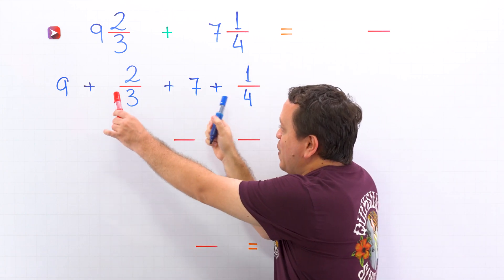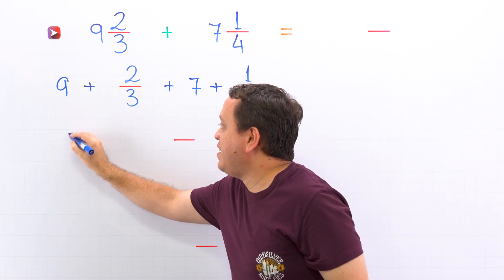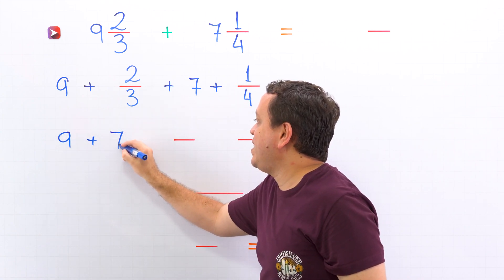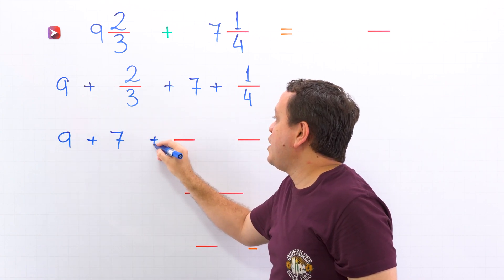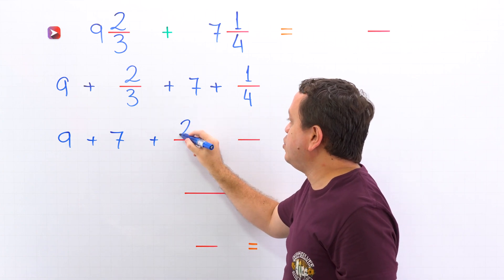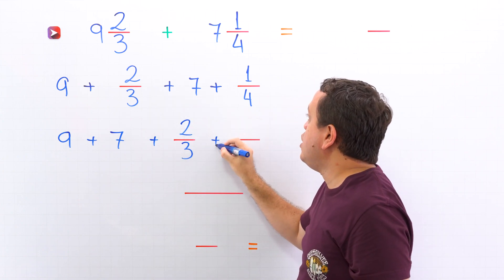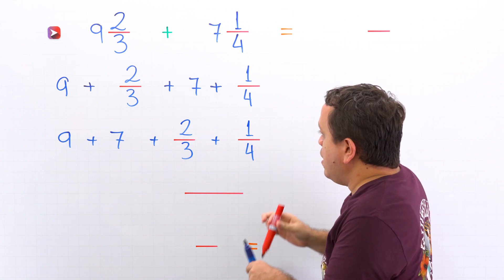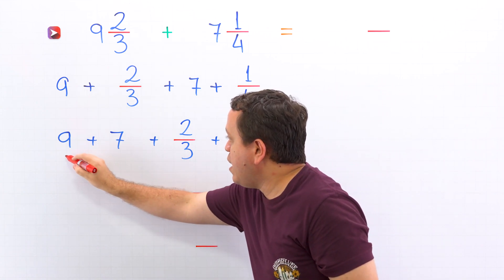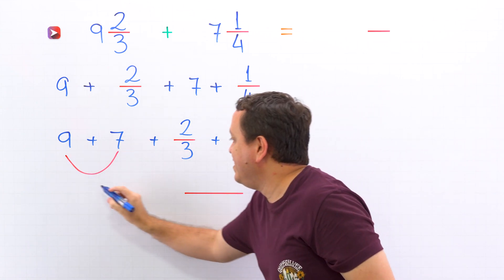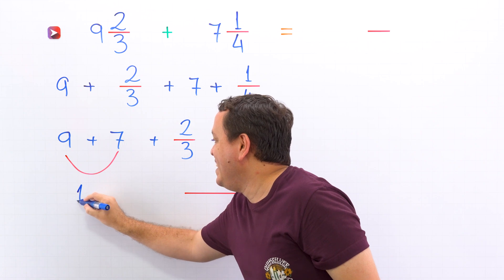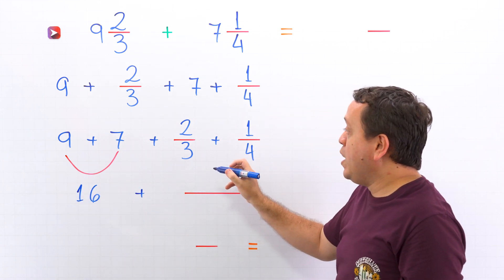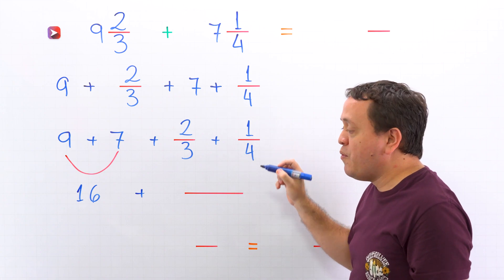Next, we put the whole numbers at the beginning — the whole numbers are 9 and 7. Next, we put the fractions: 2 thirds plus 1 fourth. Then, 9 plus 7 gives us 16. And now, we add the fractions: 2 thirds plus 1 fourth.